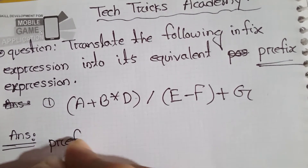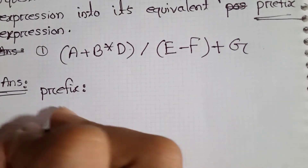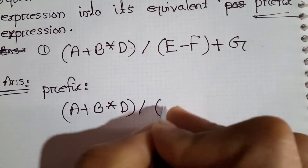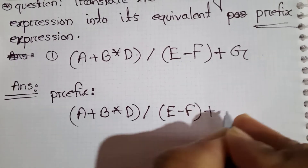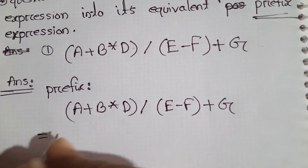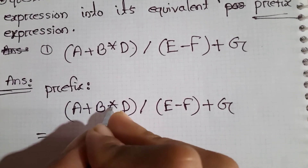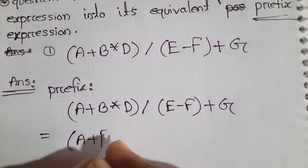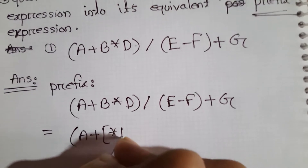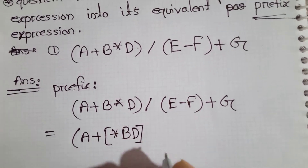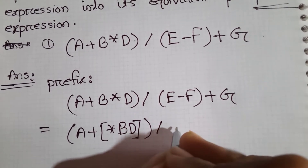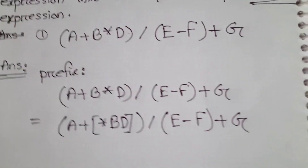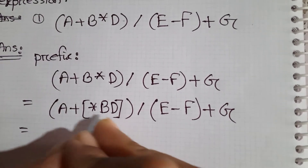Now for the prefix answer, we need to write the equation: A plus B into D, division E minus F plus G. Here we have plus and multiplication, and multiplication gets more priority, so we need to write A plus into B D because multiplication has higher priority than plus. This is the prefix expression and we do it step by step.